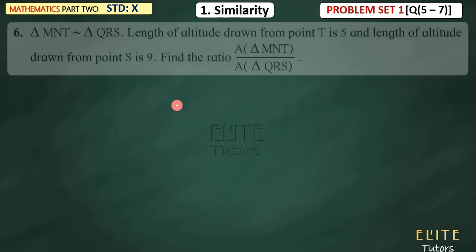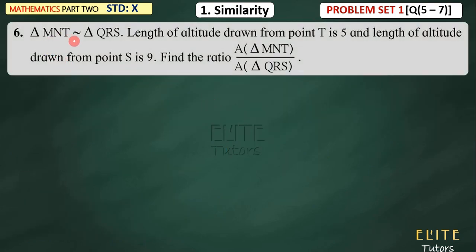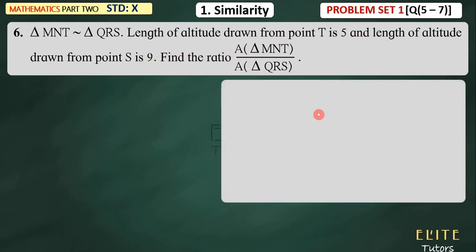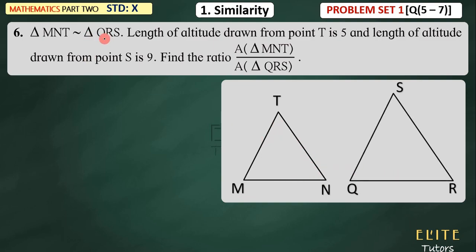Now this is the 6th question. Triangle MNT is similar to triangle QRS. You don't have a figure but there are two triangles — one is MNT and one is QRS — and the two are similar. The length of altitude drawn from point T is 5, and the length of altitude drawn from point S is 9. So the two triangles are similar but different in size; this is the small triangle because the altitude is 5 and the other has altitude 9.